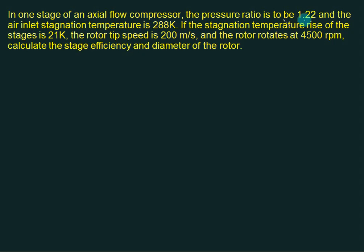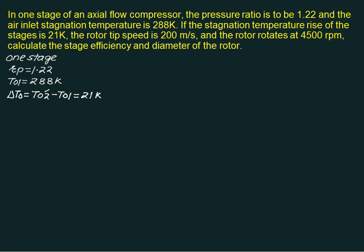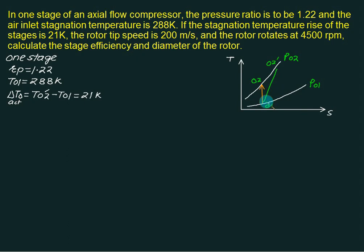Example 2 (single stage): The stage pressure ratio is 1.22, the stagnation temperature at inlet is 288 K, and the stagnation temperature rise in the stage is 21 K (the actual temperature rise). Rotor tip speed is 200 m/s and rotational speed is 4500 rpm. We need to find stage efficiency and rotor diameter. The actual temperature rise gives T02 dash minus T01 equals 21 K.